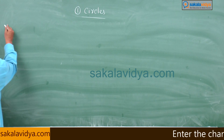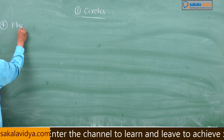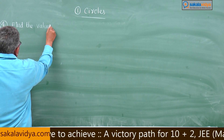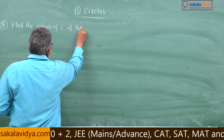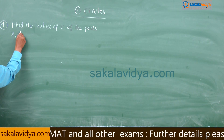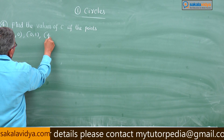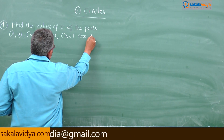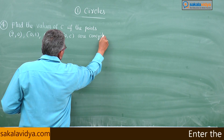Fourth problem: find the values of C if the points (2,0), (0,1), (4,5), (0,C) are concyclic.